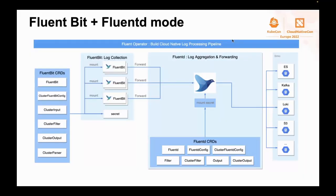Apart from FluentBit-only or FluentD-only mode, there is also a strong combination of FluentD and FluentBit in Fluent Operator, offering more flexibility by leveraging their different strengths. If you need to perform advanced data processing or route logs to more destinations, just enable FluentD and choose the FluentBit plus FluentD mode. With its rich plugins, FluentD plays the role of a log aggregation layer for more advanced log processing. You can forward logs from FluentBit to FluentD with ease using Fluent Operator.